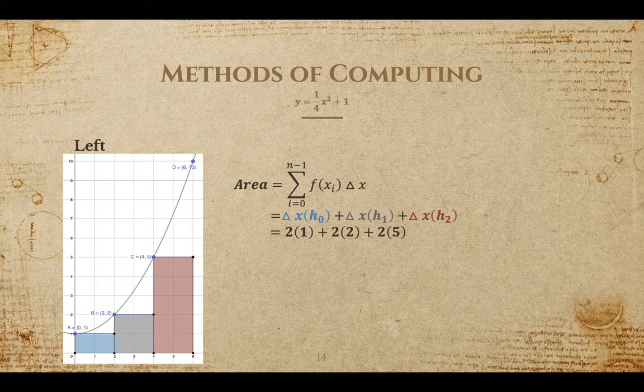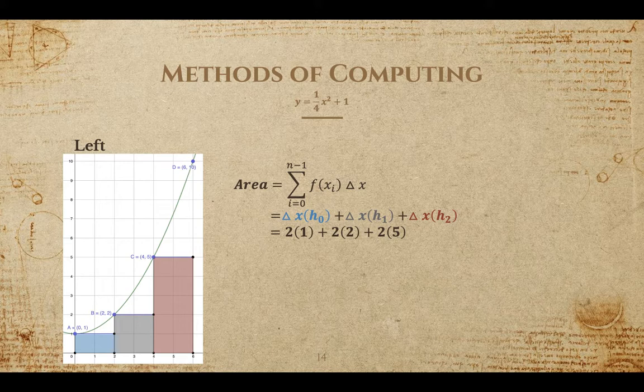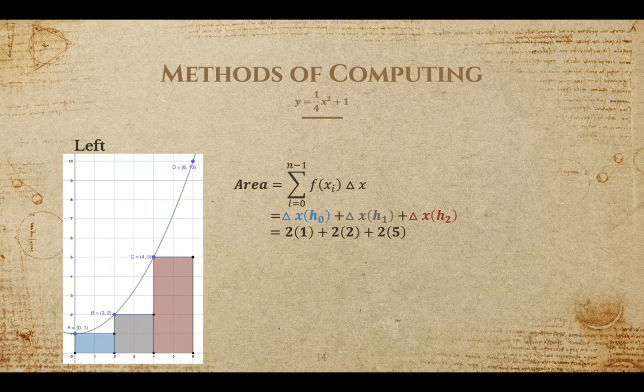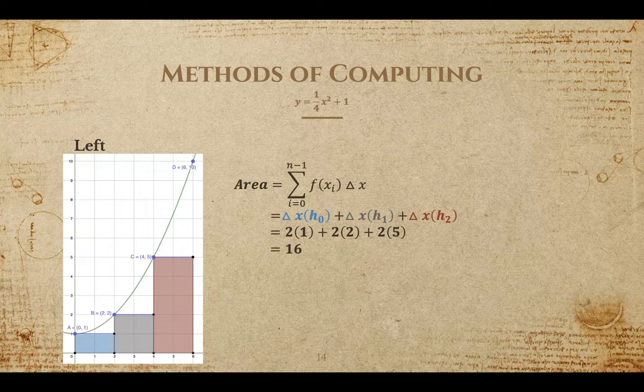To approximate the left endpoint area, we will find the area of the three rectangles, which is 2, 4, and 10, respectively. Our total approximation is 16 units squared for our left endpoints.